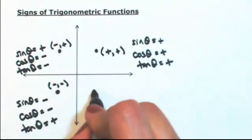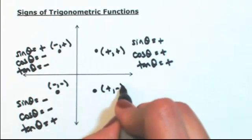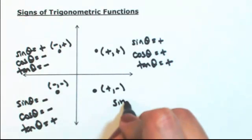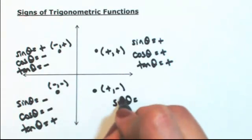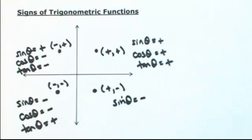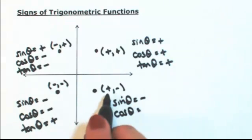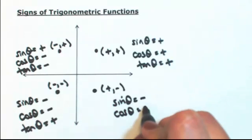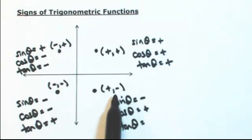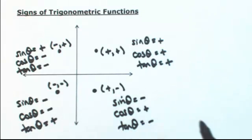In the fourth quadrant, x is positive and y is negative. So the sine of the angle — opposite over hypotenuse — negative over positive, so sine is negative. Cosine of the angle — adjacent, which is x — is positive. And then tangent of the angle — opposite over adjacent — negative over positive, so tangent is negative.